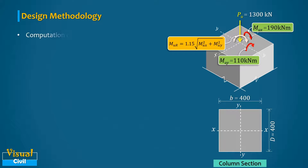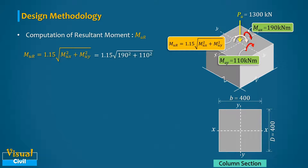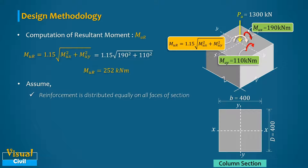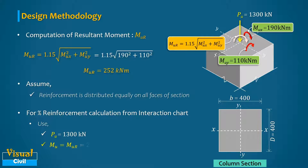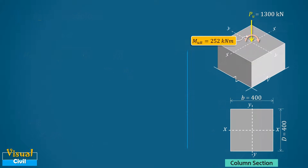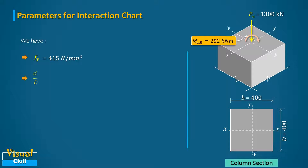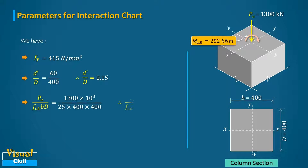Computing the resultant moment Mur gives 252 kNm. Assuming reinforcement distributed equally on all faces, for the percentage reinforcement calculation from the interaction chart, use Pu = 1300 kN and Mu = 252 kNm. The parameters required are: fy = 415 N/mm², d'/D = 0.15, Pu/(fck·b·D) = 0.325, and Mu/(fck·b·D²) = 0.157.